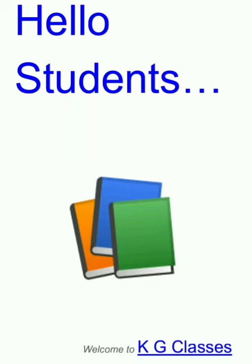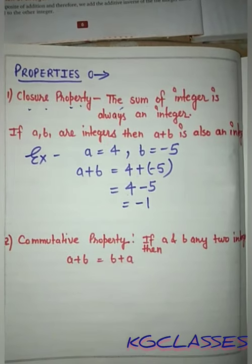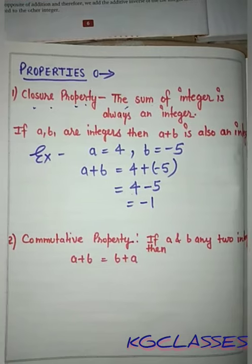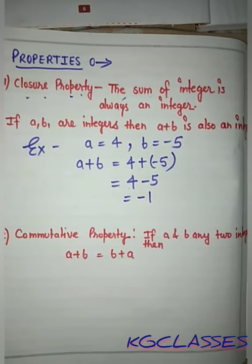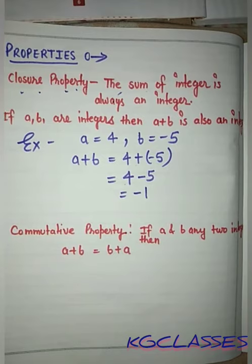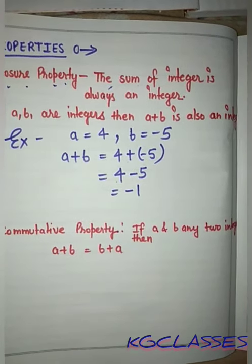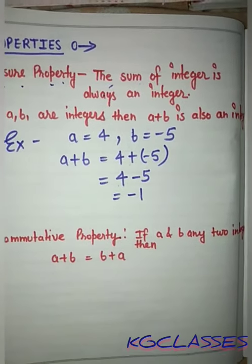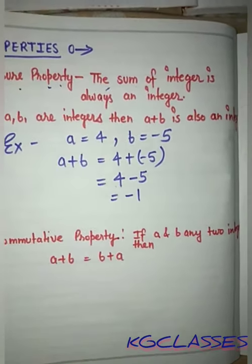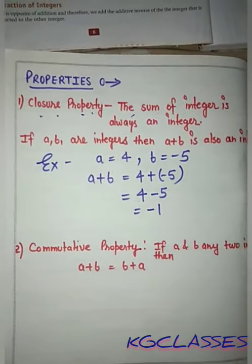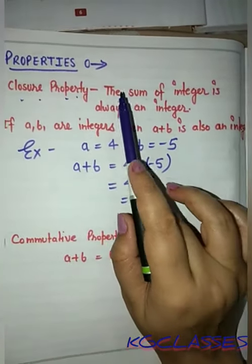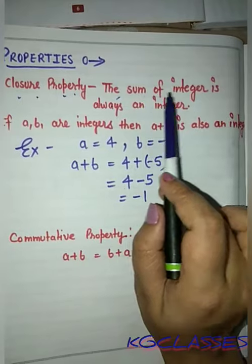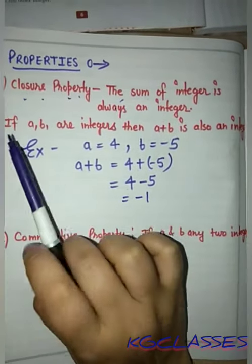Hello students, welcome to KG Classes. In the last lecture we studied about absolute values of integers, and today we are going to study about properties of integers regarding addition. So let's start. Our first property is the closure property — it says the sum of integers is always an integer.